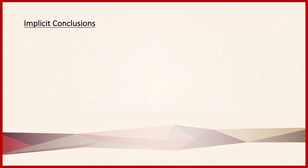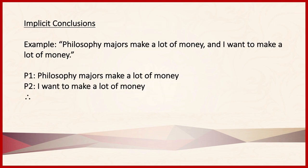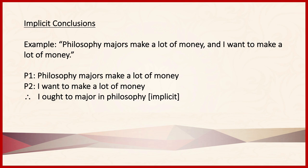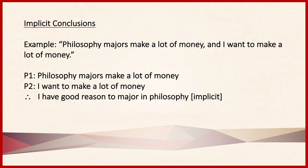Finally, notice that many arguments have implicit conclusions. For example: philosophy majors make a lot of money, and I want to make a lot of money. We need to follow the principle of charity when identifying implicit conclusions just as much as when finding implicit premises. One thing we might conclude is: I ought to major in philosophy. Well, that might follow, but notice that what the premises give us is simply a reason to major in philosophy — there might be other countervailing reasons for why I shouldn't. So a much more conservative conclusion to fill in here would be: I have good reason to major in philosophy.